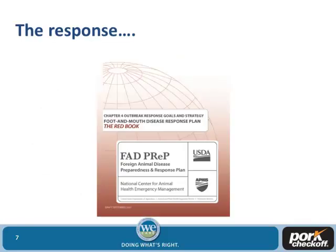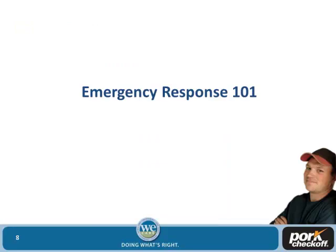We've done a lot of planning with USDA. There are a lot of different books out now, but the red book for foreign animal disease — specifically for foot and mouth disease — has been out for a while. These things have been considered by USDA as far as methods and how you're going to approach euthanasia and disease response. I wanted to give you a response 101 and point out those little choke points I was talking about, where I see some issues.